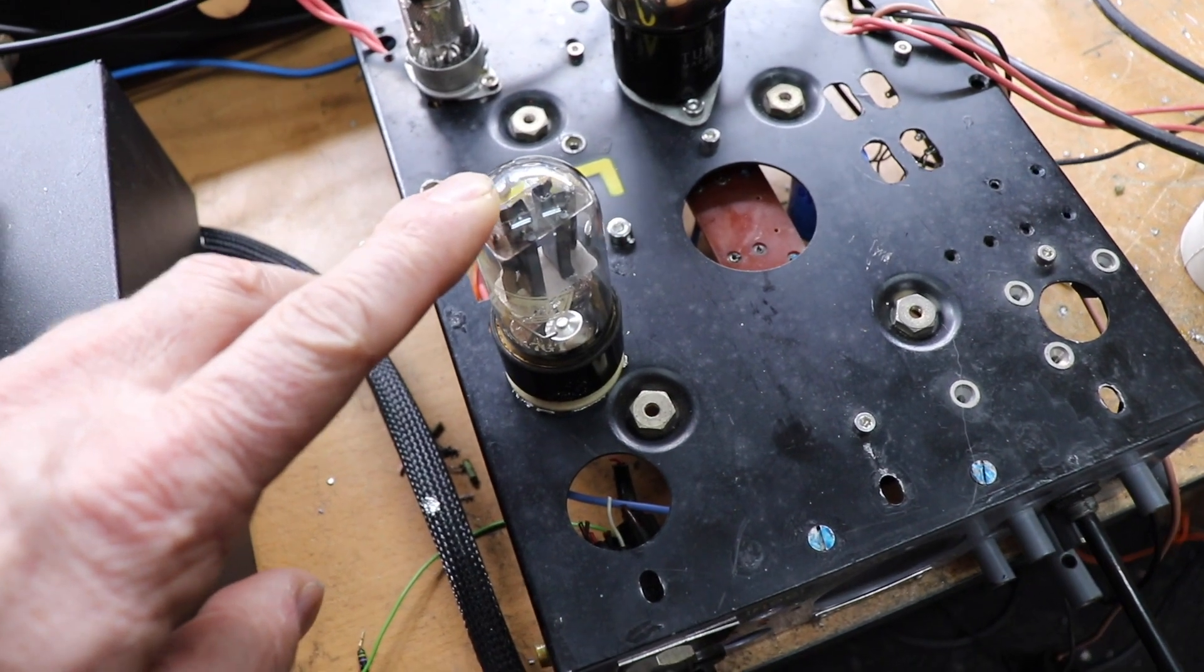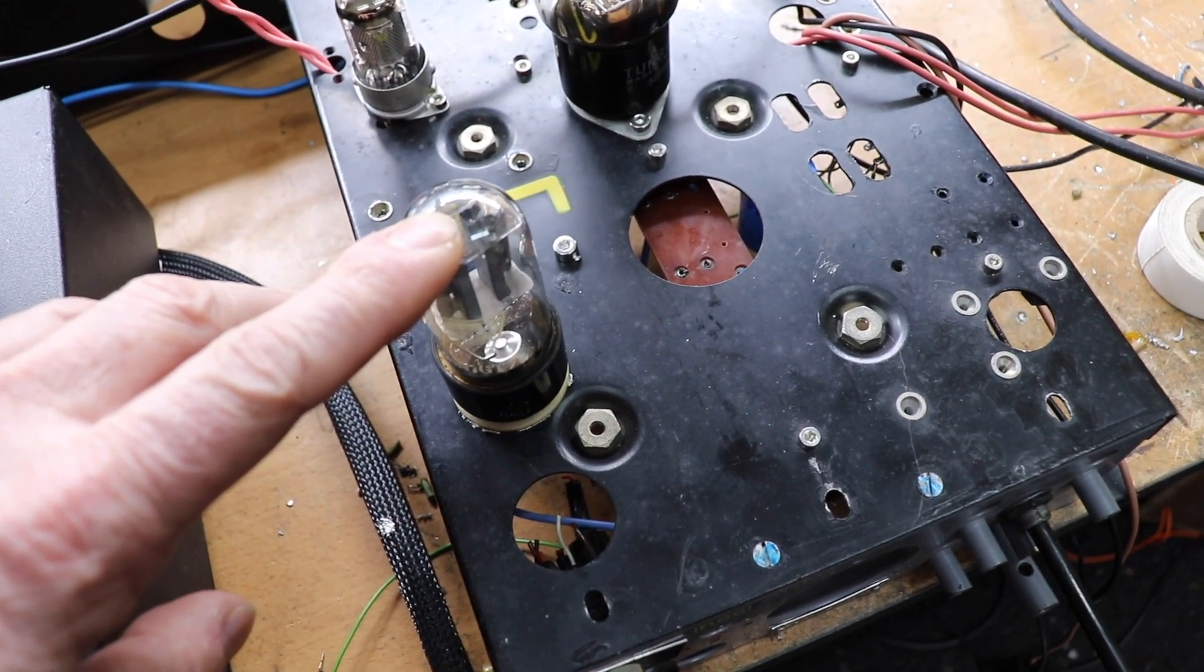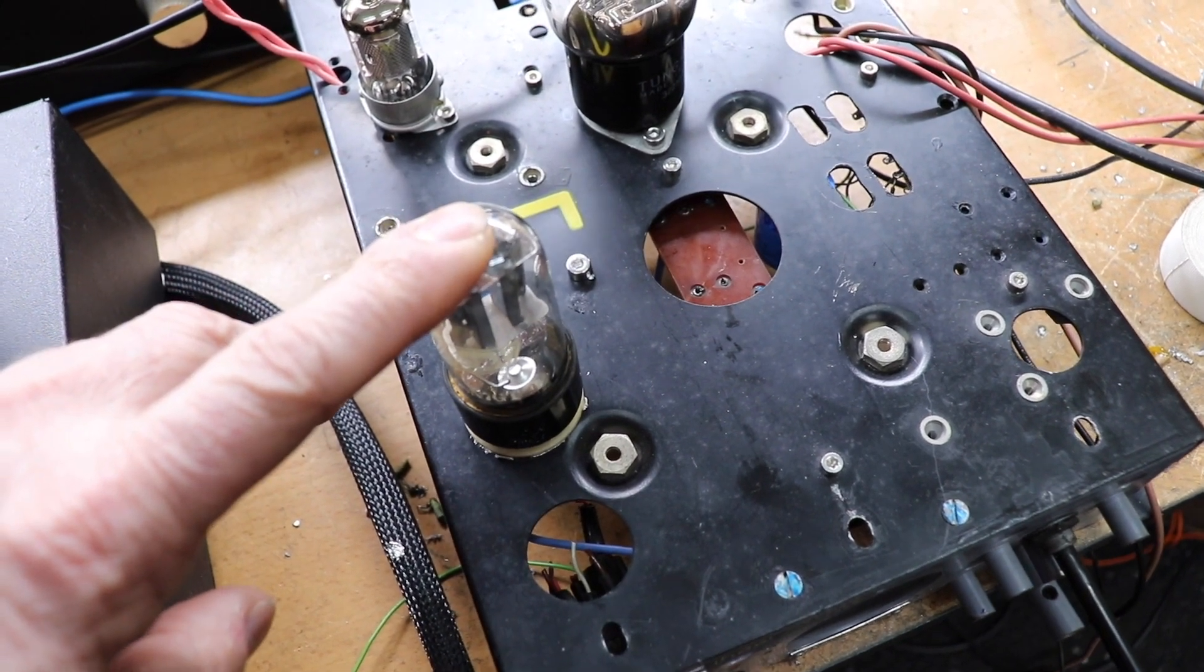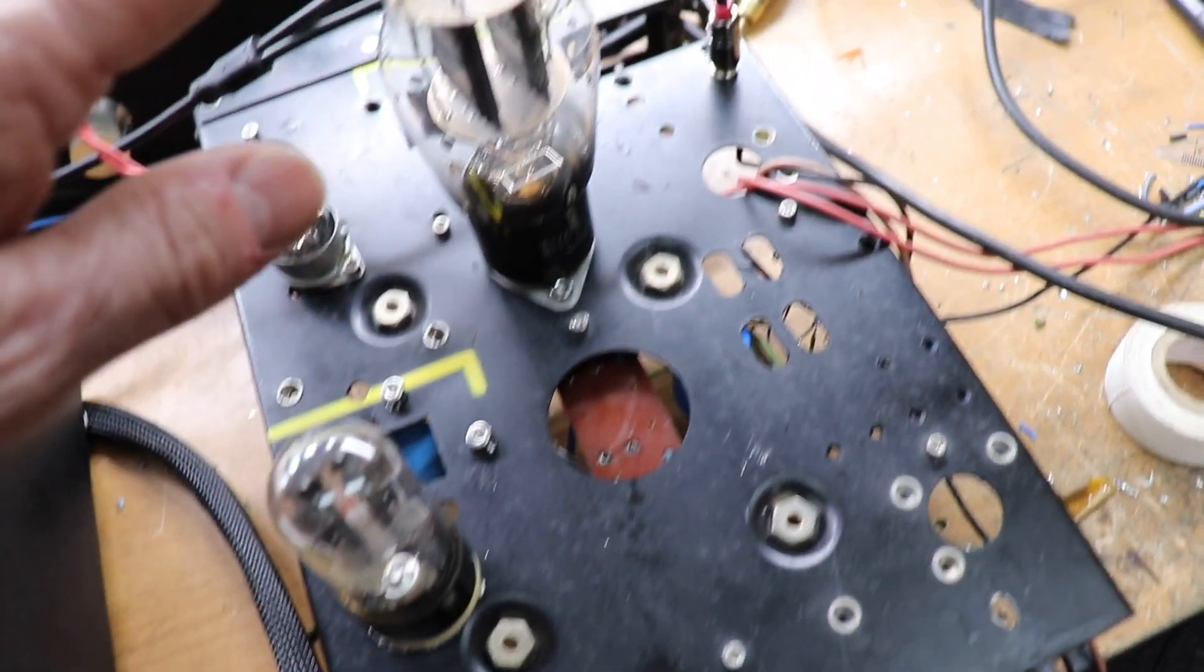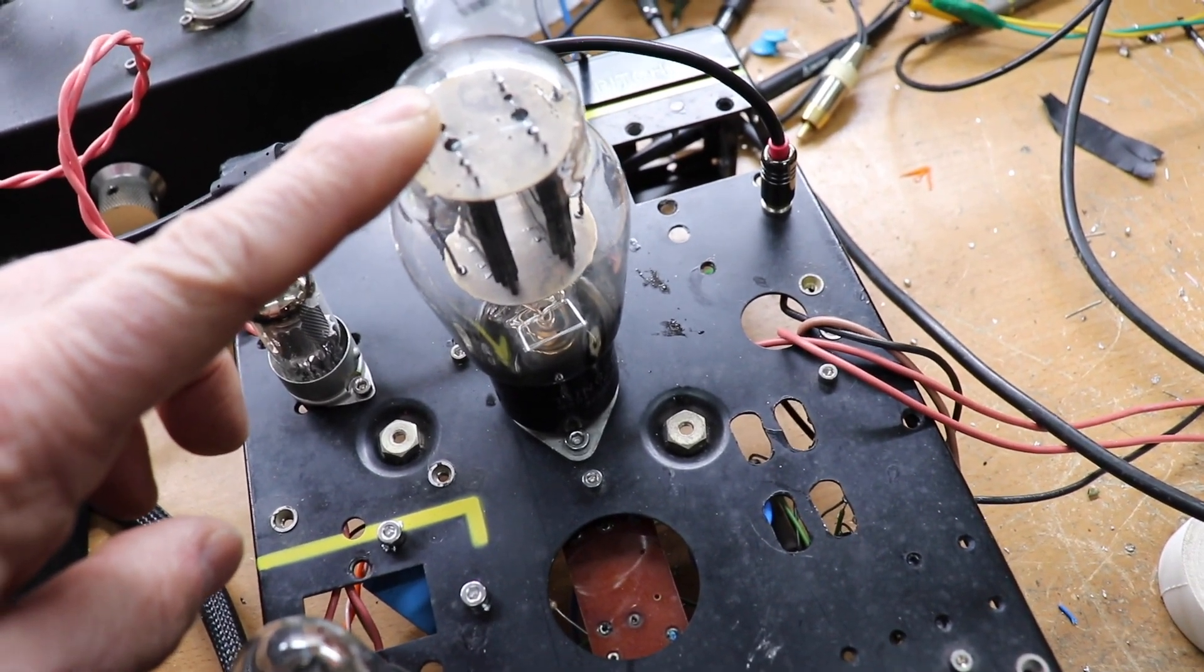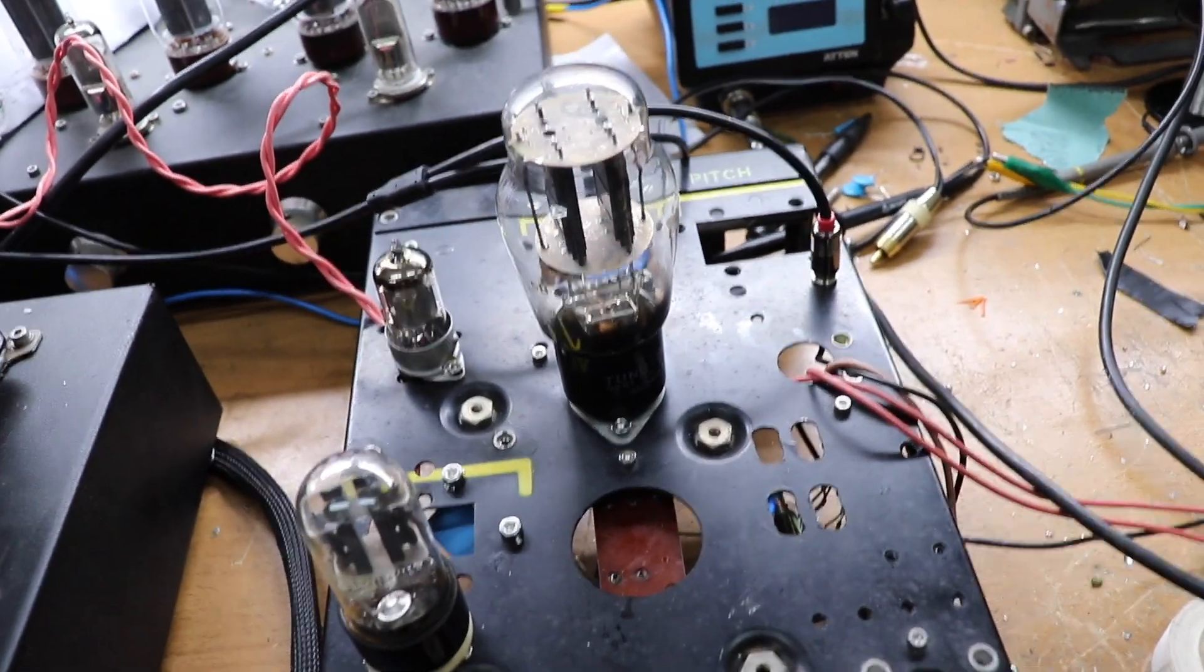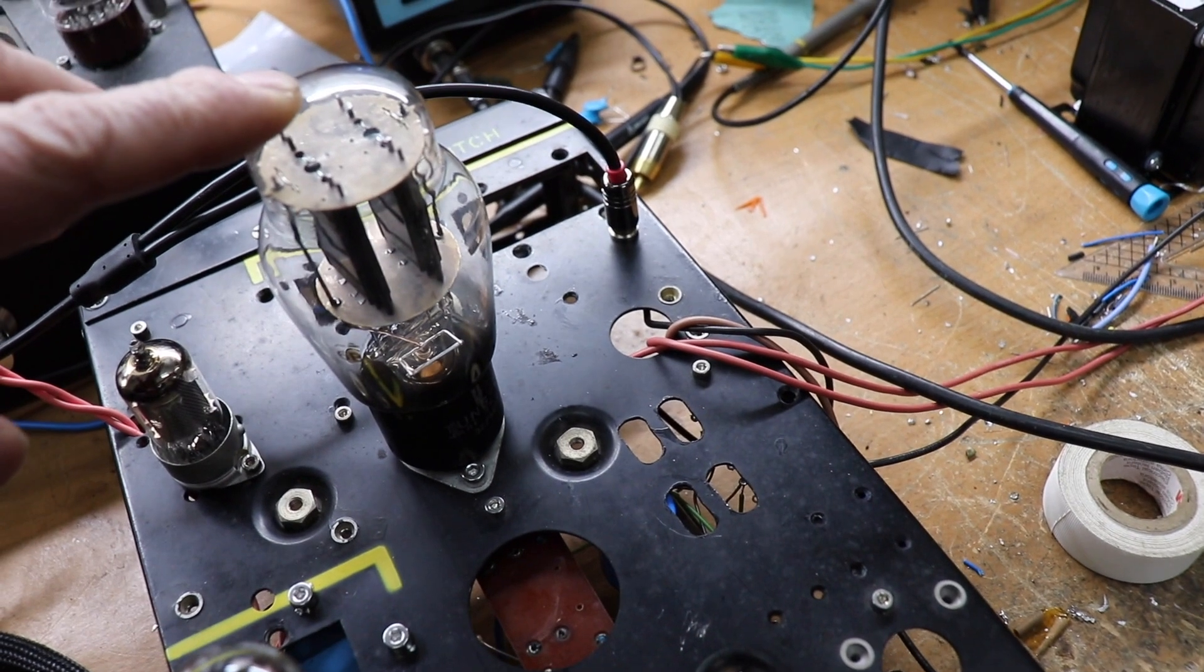And that's a 6SN7 double triode which provides further amplification and basically is a driver for this tube here which is a 6B4G which again is a triode output triode.